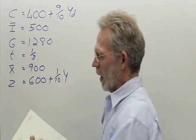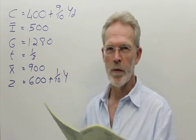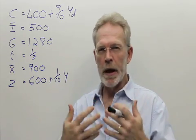Given the following information, we have to calculate the size of the multiplier and also the equilibrium level of income. Let's start with the multiplier.